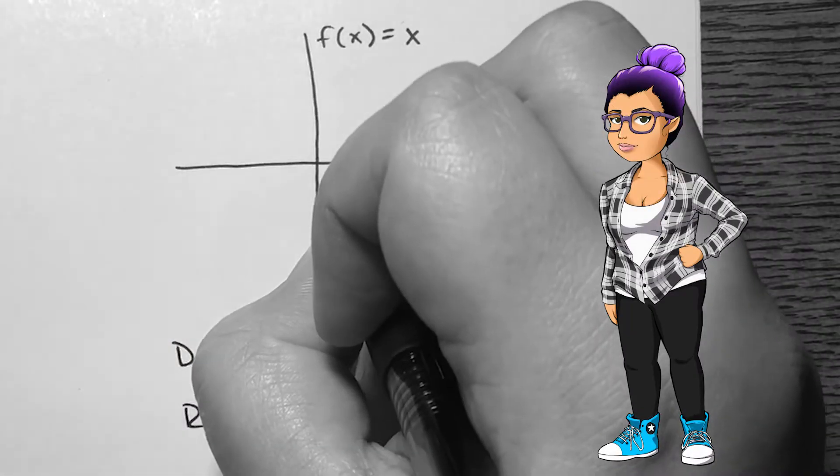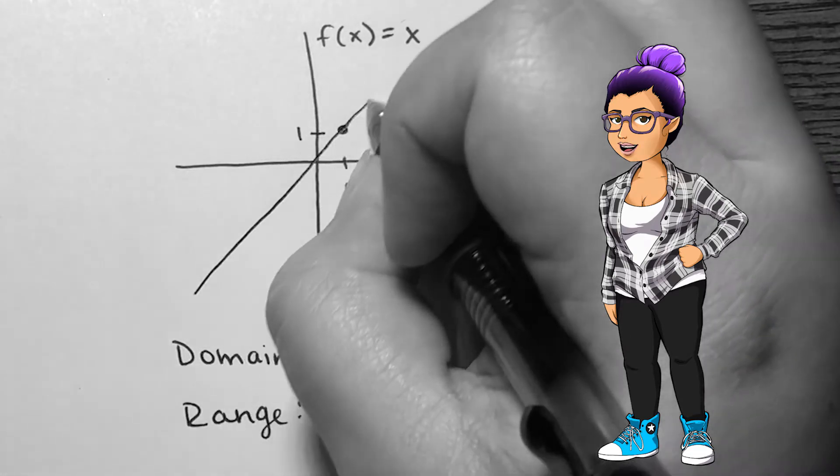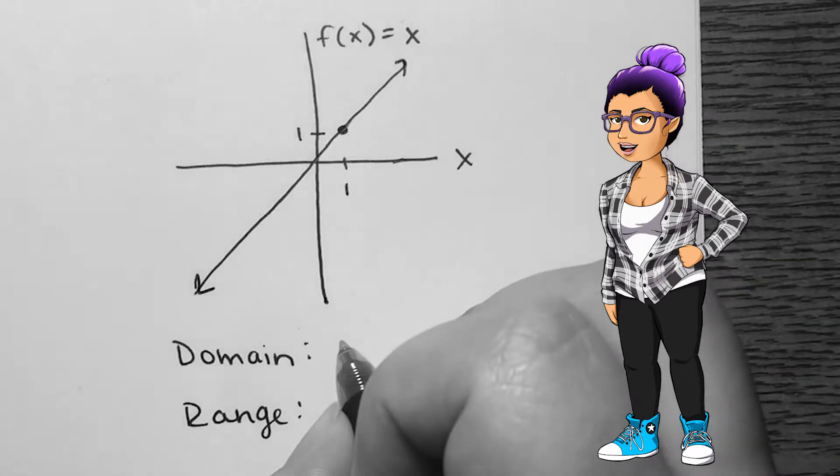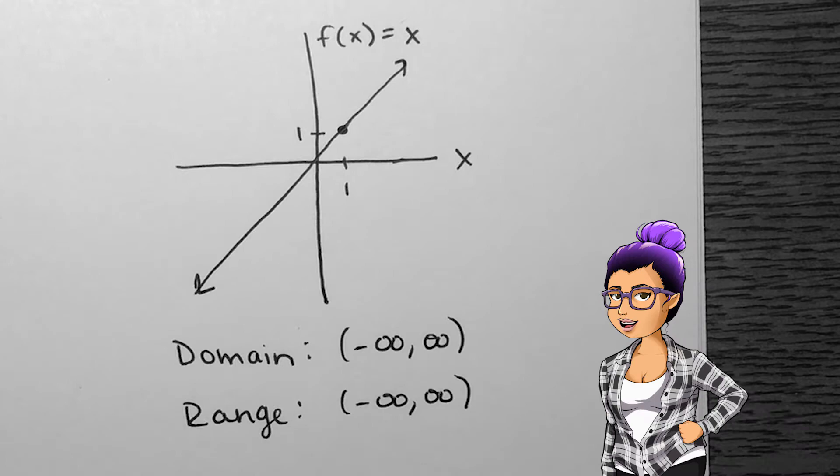The identity function can be written as f of x equals x. Whatever x value goes in is the value that comes out. The result is a line. The domain is all real numbers and so is the range.